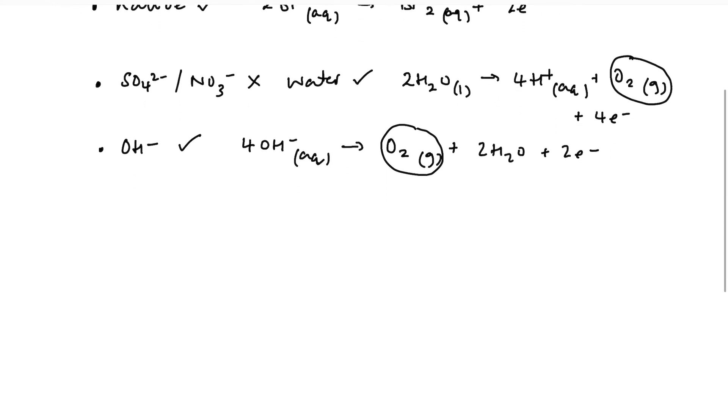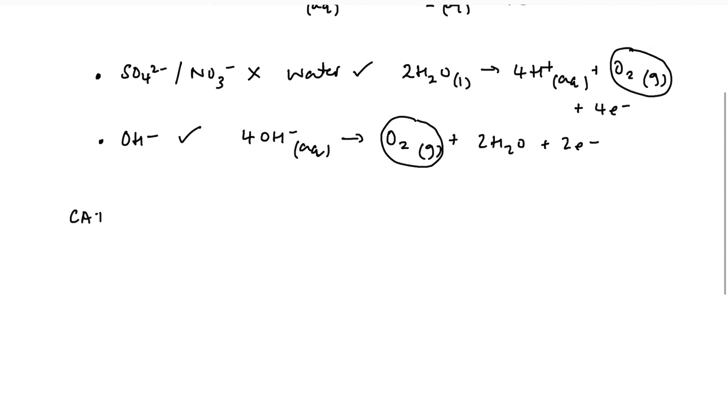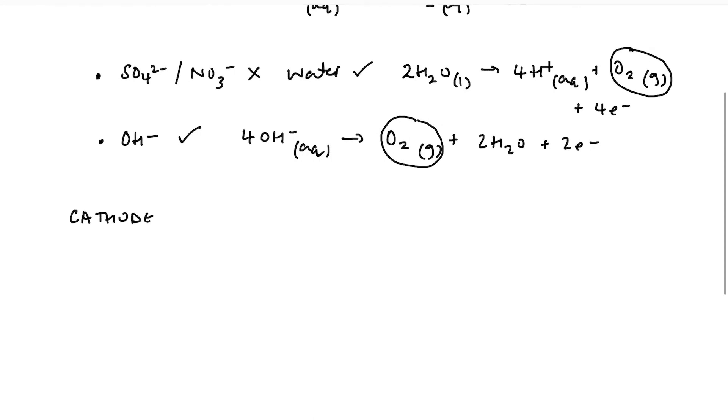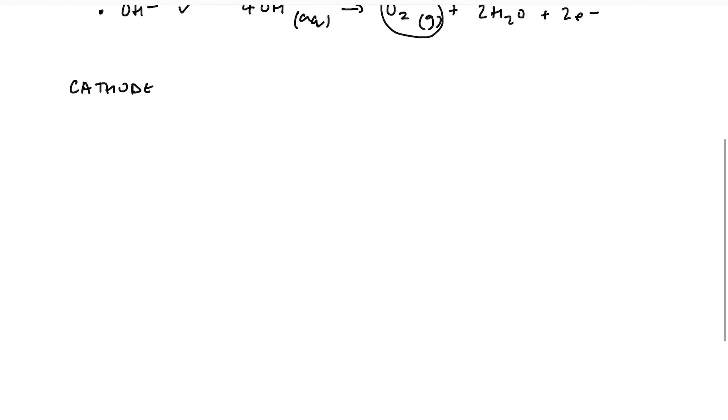When we're talking about the cathode, then this is where reduction is happening. So site of reduction. So either we are reducing water, or the cation, i.e. the metal ion of our salt.